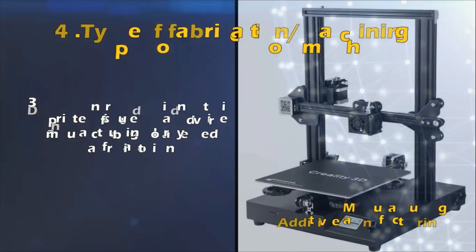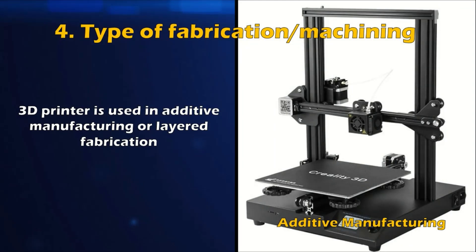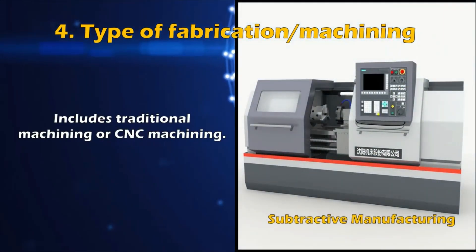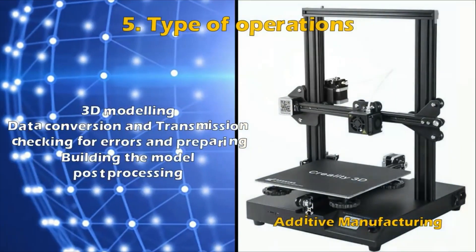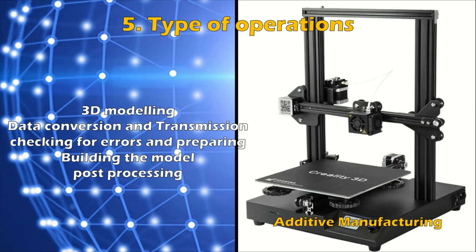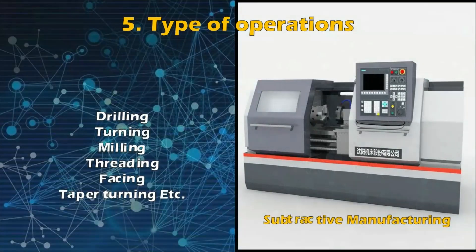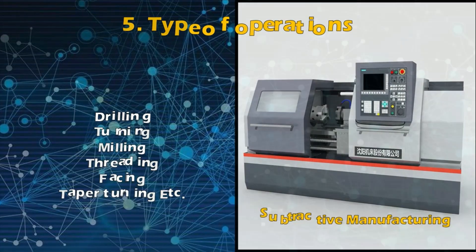Number four: type of fabrication or machining. The additive manufacturing process includes 3D printing or layered fabrication. The subtractive manufacturing process includes traditional machining or CNC machining. Number five: type of operations in the process. The standard processes in additive manufacturing are 3D modeling, data conversion and transmission, checking for errors, preparing and building the model, and finally post-processing to create functional parts, products, or prototypes.